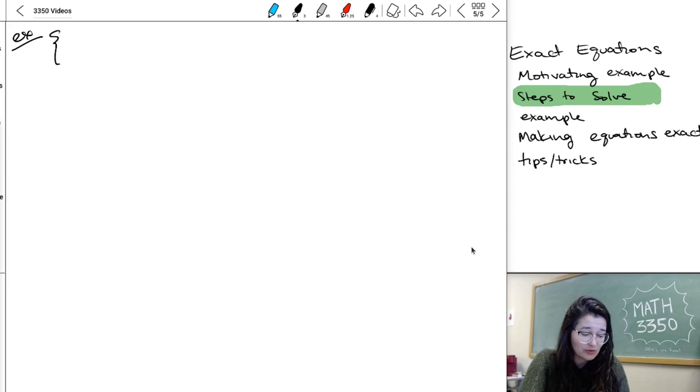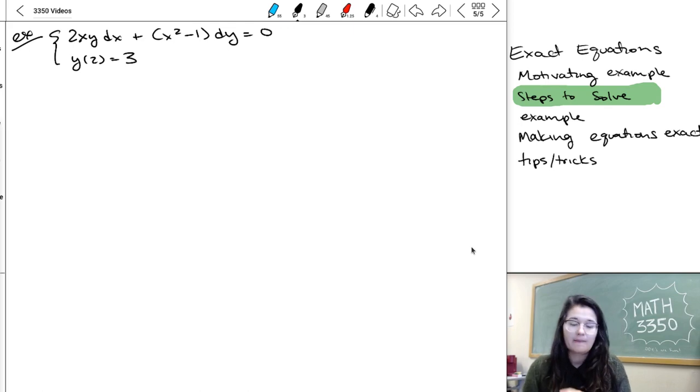This really is a type of problem where I think it's easier when you have actual values to work with. So we're going to try to solve this equation: 2xy dx plus the quantity x squared minus 1 dy equals 0, given the initial condition y of 2 equals 3.